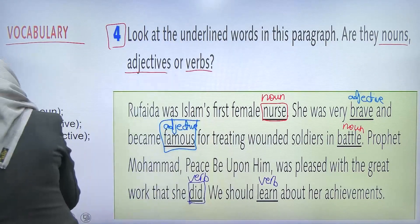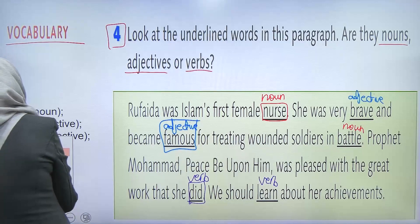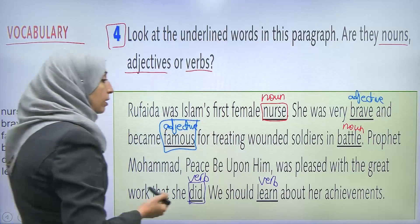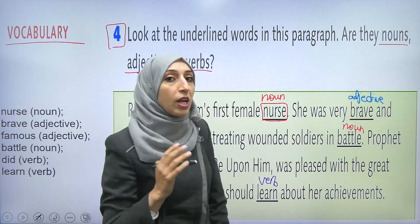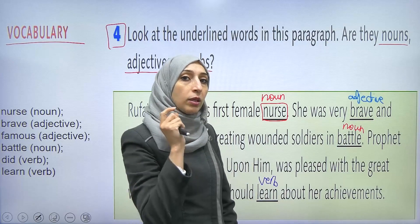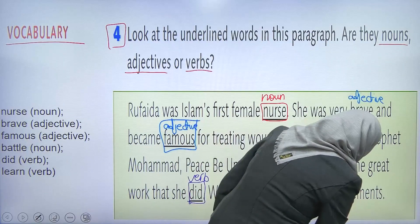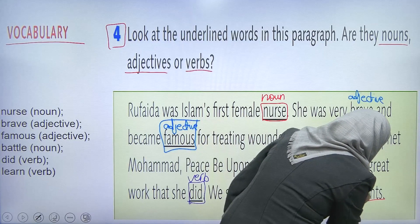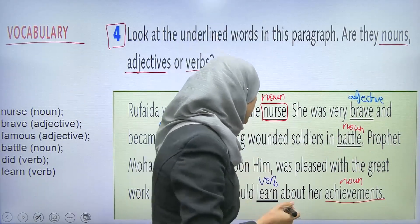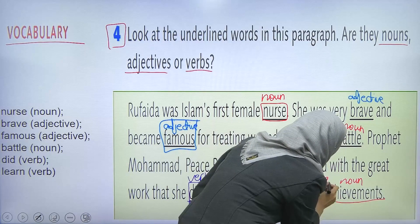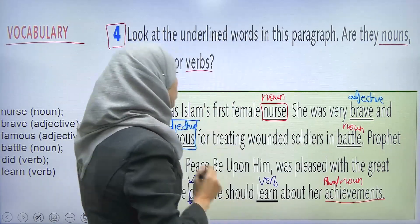يا مس، حكيتي لنا إنه noun هي أسماء الناس. بس برضو تيجي بمعنى إنجازات. كلمة إنجازات، تقسيمها بيكون noun، اللي هو الاسم. هاي كمان ناون. وإيش مالو؟ Singular ولا plural? Of course it's plural. So let's write plural noun.